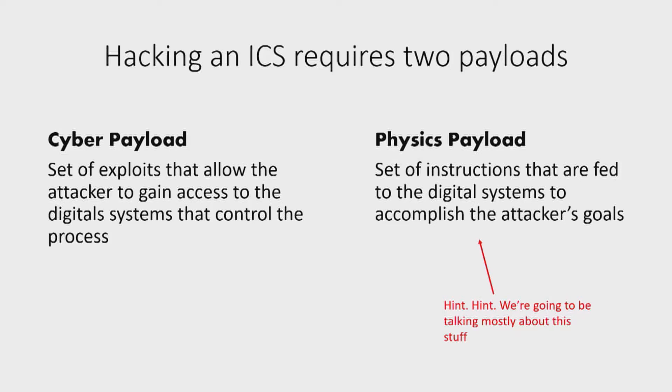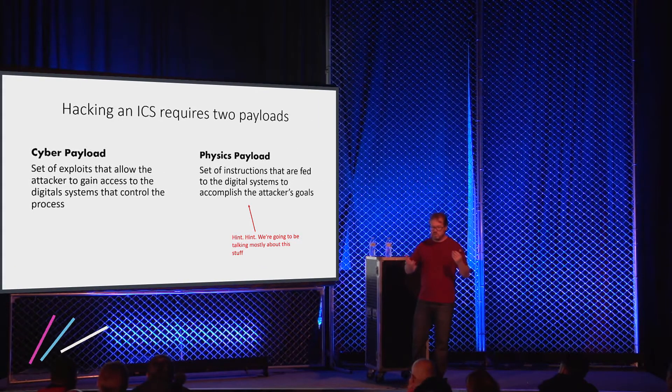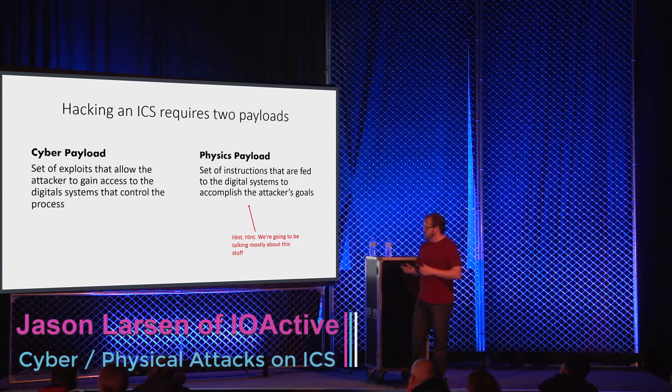The second set of things that you're going to need is the physics payload. The physics payload are the set of instructions that the attacker feeds to the control system to accomplish his goals. And if one or the other of these two fizzle, then the attacker still doesn't win.